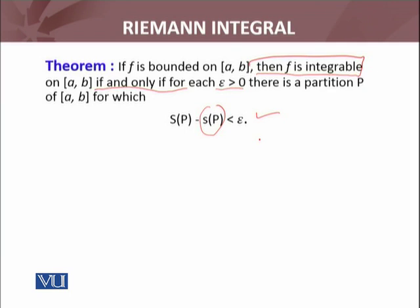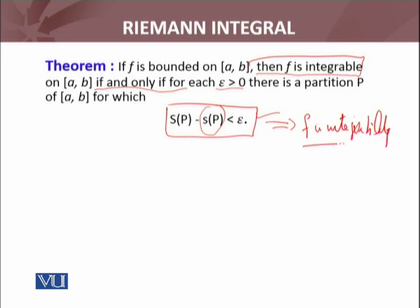To prove this, since it is an if and only if condition, I will prove both ways. First, I will suppose this condition holds and show that F is integrable, and vice versa — if F is integrable, I will show that this condition holds. For the first direction, I suppose that for every epsilon greater than zero, there exists a partition such that U(P) minus L(P), the Riemann upper sum minus lower sum, is less than epsilon.